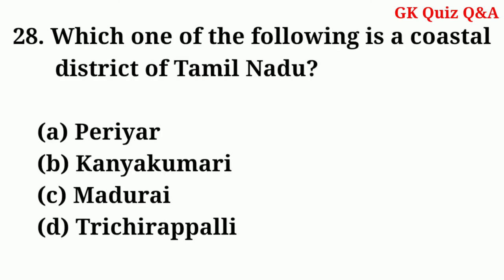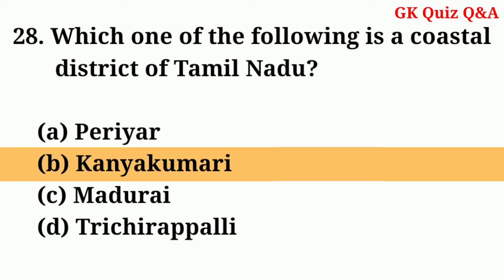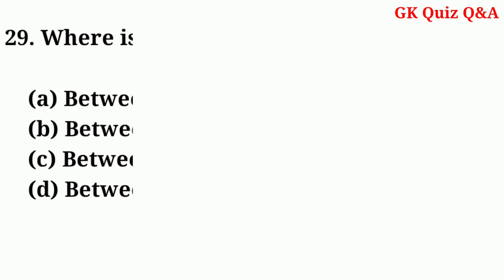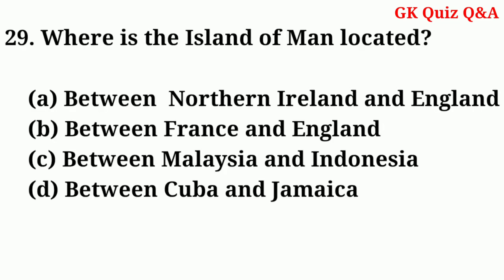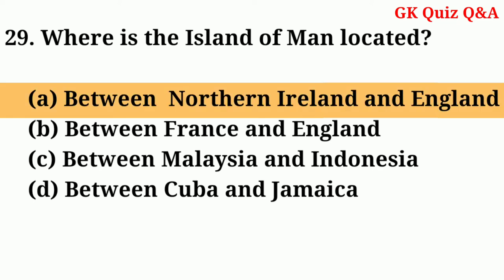Which one of the following is a coastal district of Tamil Nadu? Answer: Kanyakumari. Where is the Island of Man located? Answer: Between Northern Ireland and England.